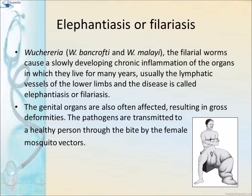Elephantiasis or Filariasis: Wuchereria bancrofti and Wuchereria malayi are filarial worms that cause a slowly developing chronic inflammation of the organs in which they live for many years. Usually the lymphatic vessels of the lower limbs are affected, and the disease is called elephantiasis or filariasis. The genital organs are also often affected, resulting in gross deformities. The pathogens are transmitted to a healthy person through the bite of a female mosquito vector.